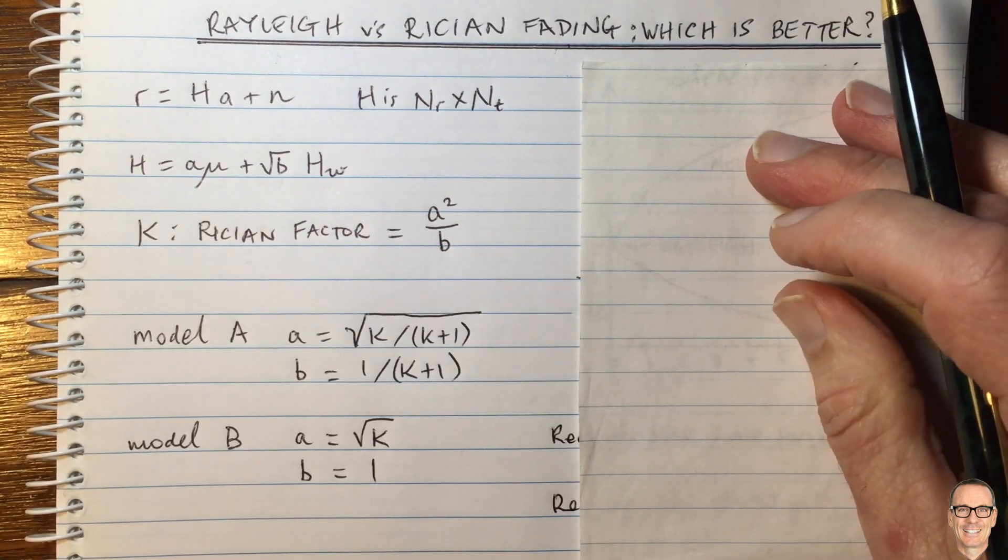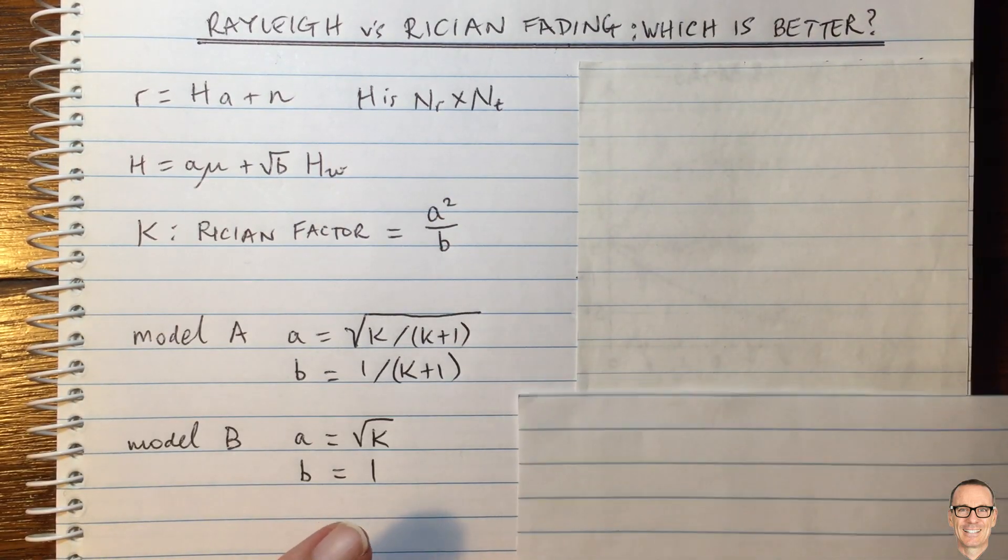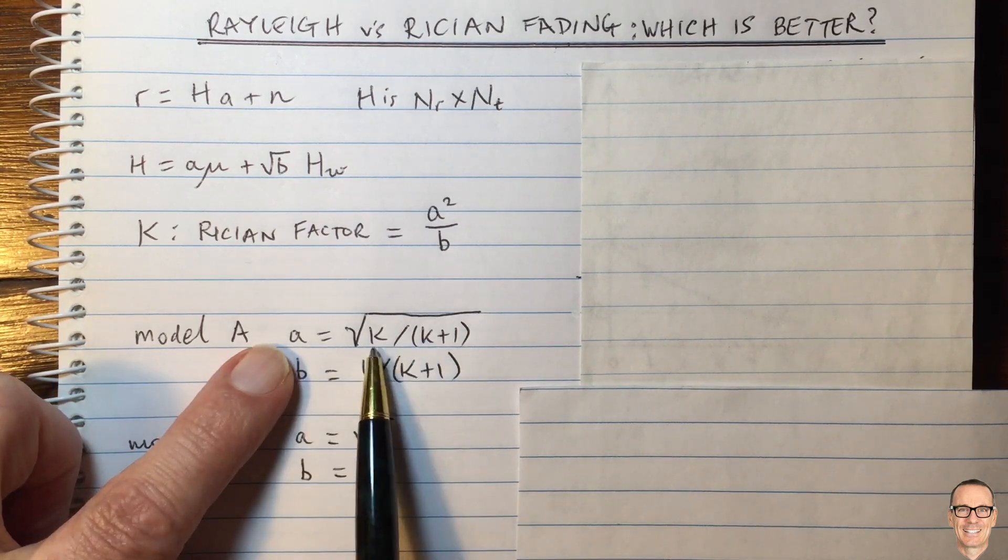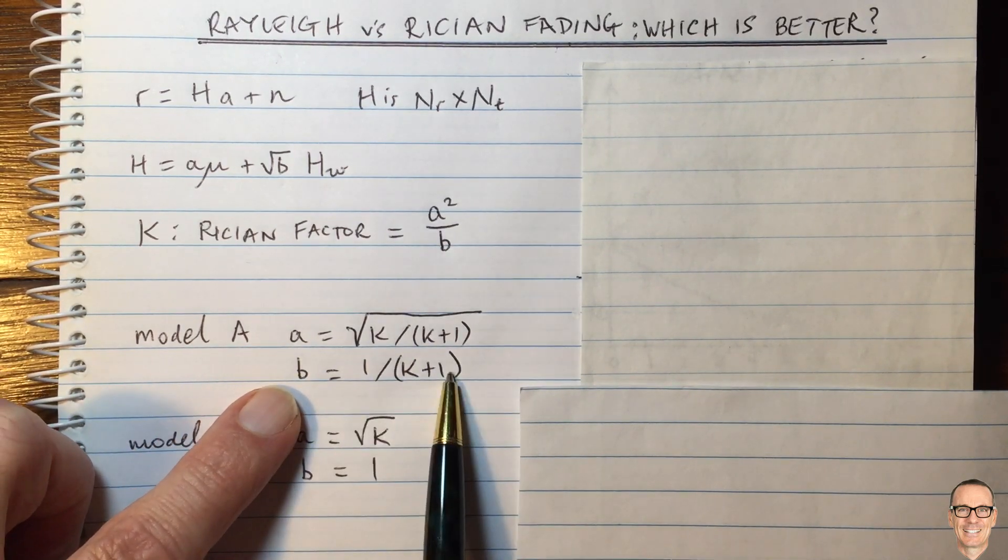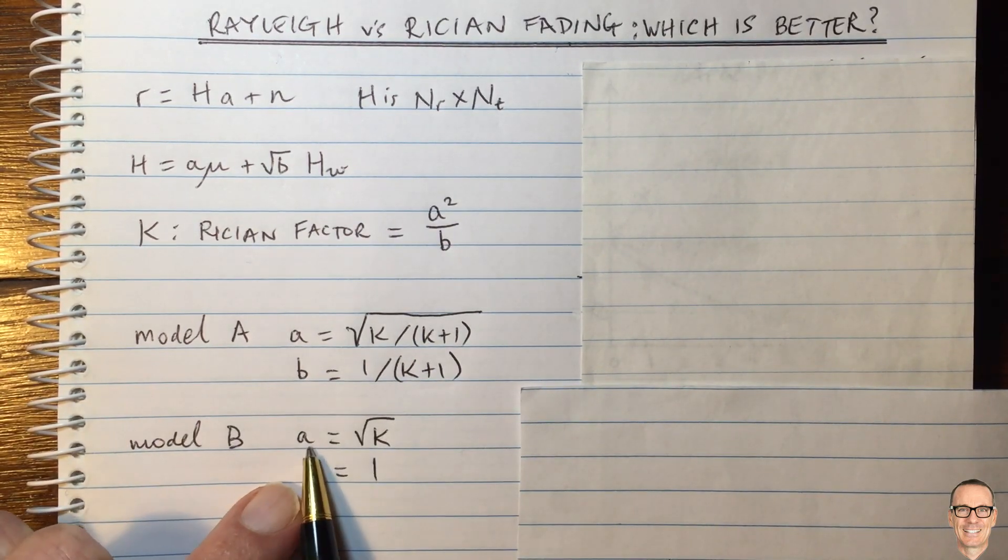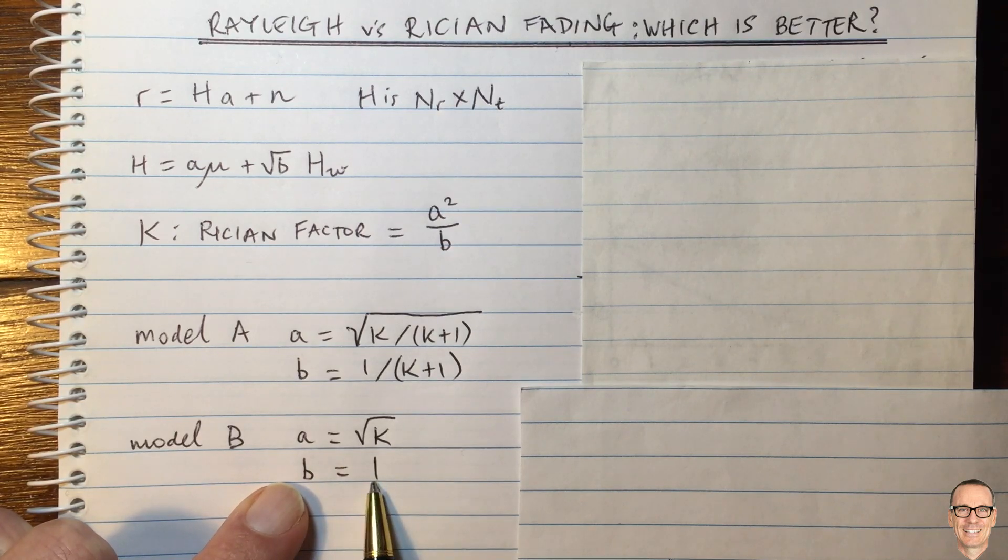And let's look at two different models for the way we define A and B in our normalization. So here's model A. And model A has a situation where A equals, given by this value, and B by this. And model B, we have A is the square root of K and B is 1.